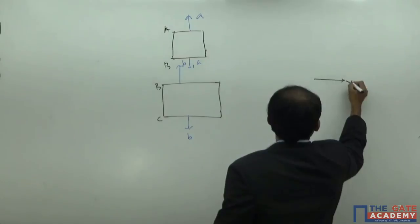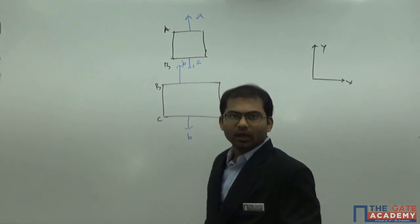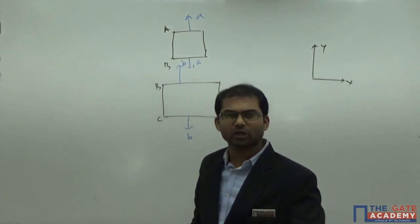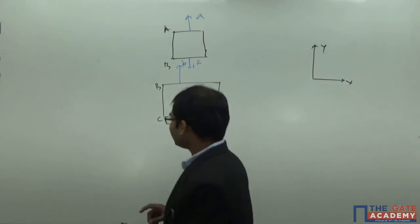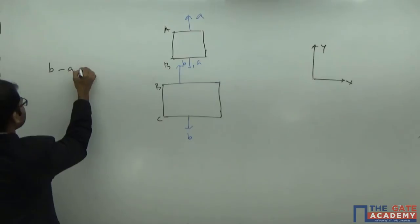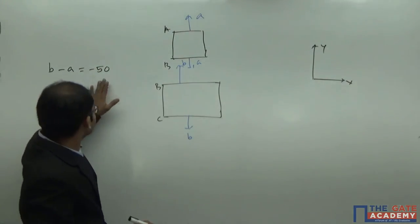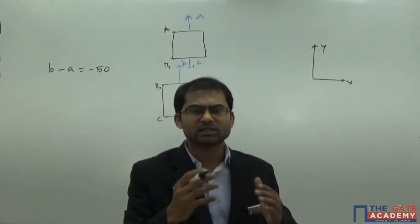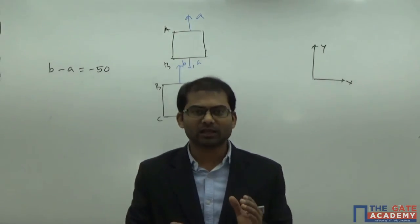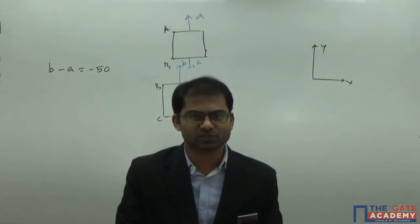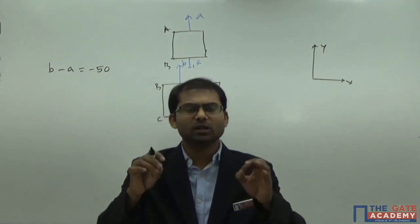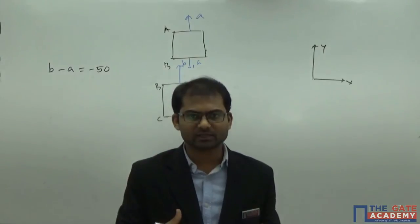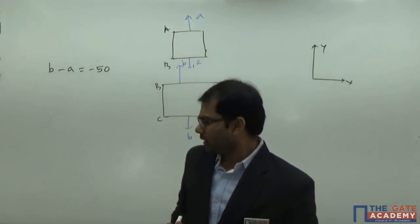Let the forces induced on sections AB and BC be A and B respectively, using the y-direction coordinate system. At section B, A and B give rise to 50 kN in the negative y-direction. The equilibrium equation is: B minus A equals minus 50 kN. We have only one equation, so this is also a statically indeterminate numerical. The compatible situation is that overall elongation of the bar cannot be more than 1 mm.